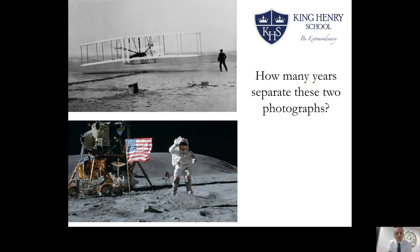The top picture shows you the first time that man was able to take off in one of the early aeroplanes. The second photo at the bottom shows you when we were able to land a man on the surface of the moon for the first time. The question is: how many years separate these two momentous events — from the first takeoff in the earliest aeroplane to being able to travel into space and land on the surface of our moon?